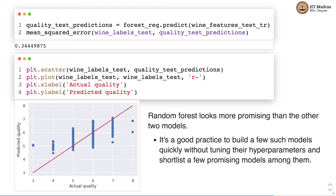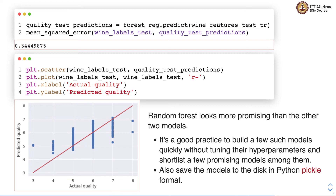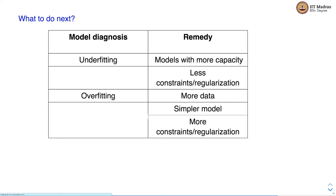It is good practice to build a few such models quickly without tuning their hyperparameters and shortlist a few promising models among them. We also need to save these models to disk in Python using the pickle format. Once we have a model, we often perform model diagnostics to find out whether the model is suffering from underfitting or overfitting, which we have discussed in the machine learning techniques course.